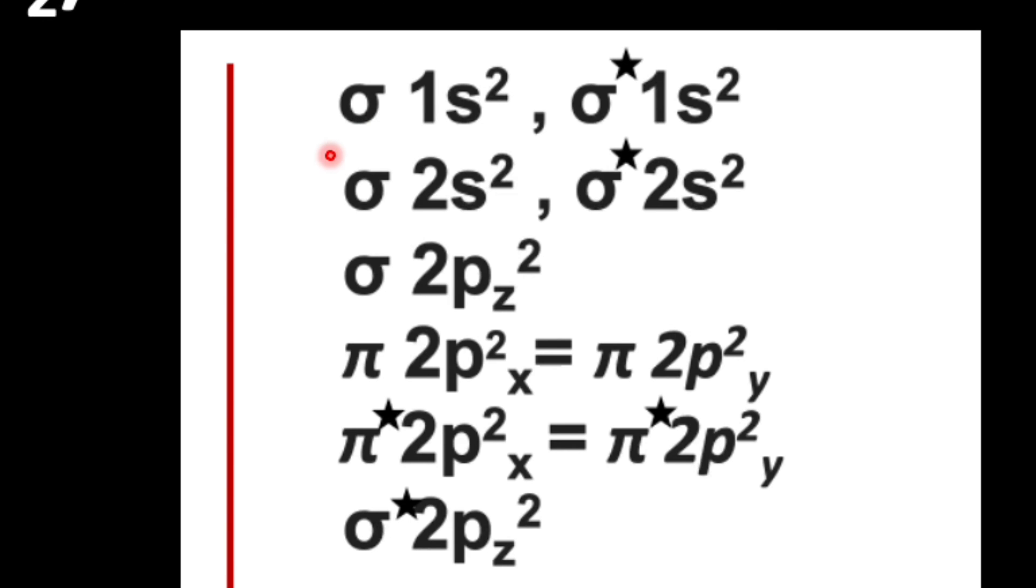Here you can see a table which shows the filling of molecular orbitals based on increasing energy level. It means after filling sigma 1s bonding molecular orbital, electrons enter into sigma star 1s orbital, then sigma 2s orbital.